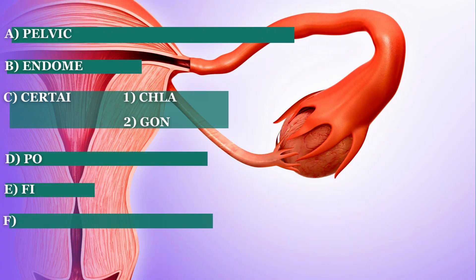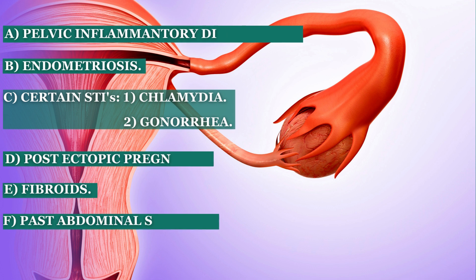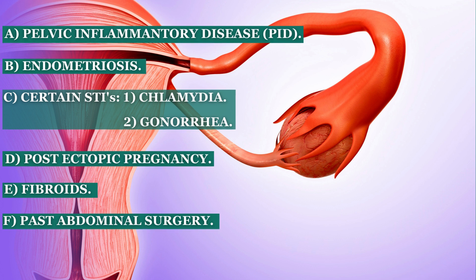The causes of hydrosalpinx include pelvic infection — what we call PID — as well as endometriosis. It can also be due to sexually transmitted infections which ascend into the tube and affect it. The commonest are chlamydia and gonococcal infection. Your tube can also be blocked following an operation, such as post-ectopic pregnancy surgery.